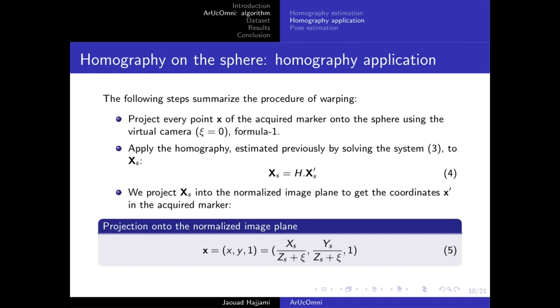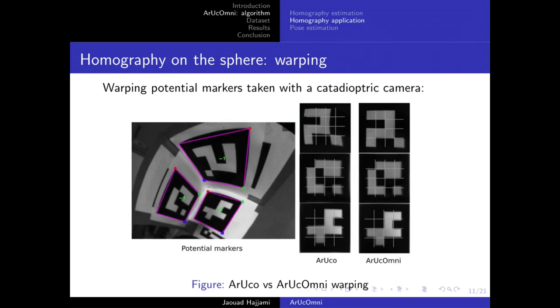This allows us to extract the binary code of the marker, because extraction very often fails using standard ArUco homography estimation based on perspective projection only. As you can see on the right side of this figure, the grid perfectly fits on the bits of the marker using ArUco Omni homography.